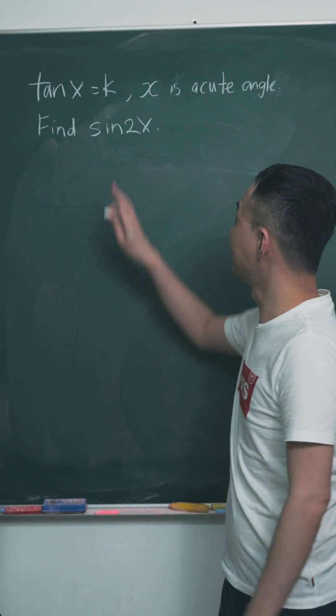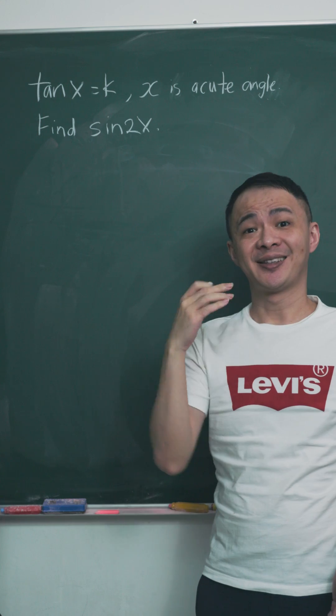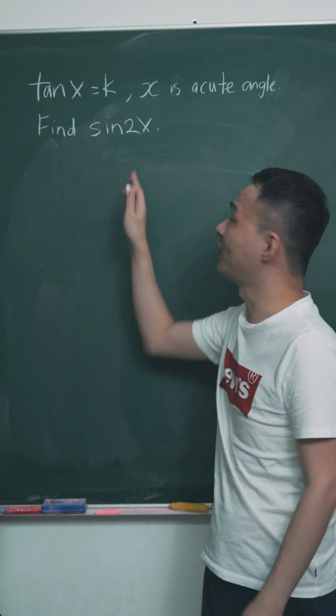Let's have a look at this question. They say tangent x equals k, and the question also tells me x is an acute angle. And then they ask me to find sine 2x.